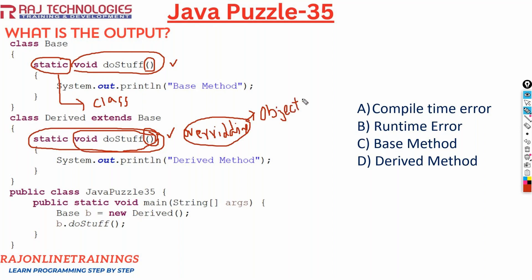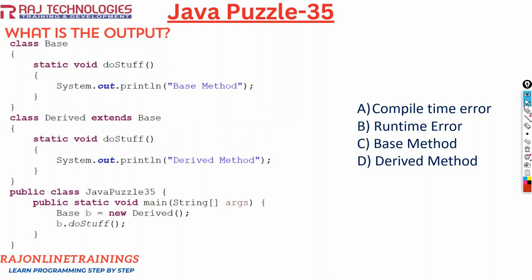So in this case, as we are using the static keyword for our methods, static methods cannot be considered as overridden. Static methods cannot be overridden — this is the key point we should remember. So doStuff in Base is a separate method and doStuff in Derived is a separate method. When you say Base b = new Derived(), we are referring to the Base class here.